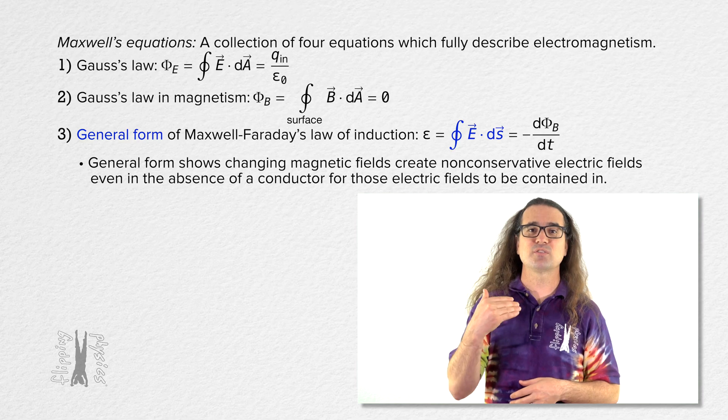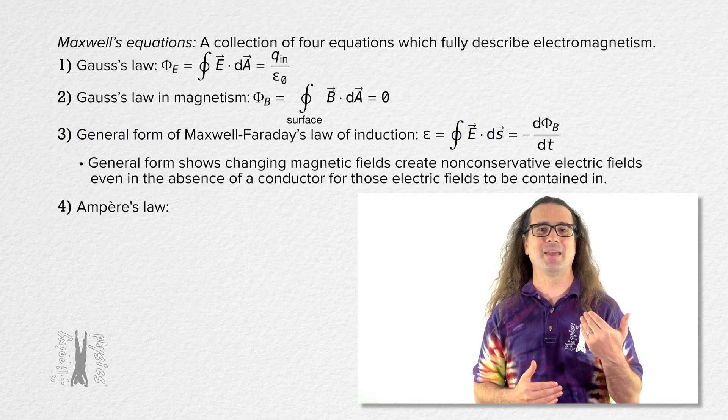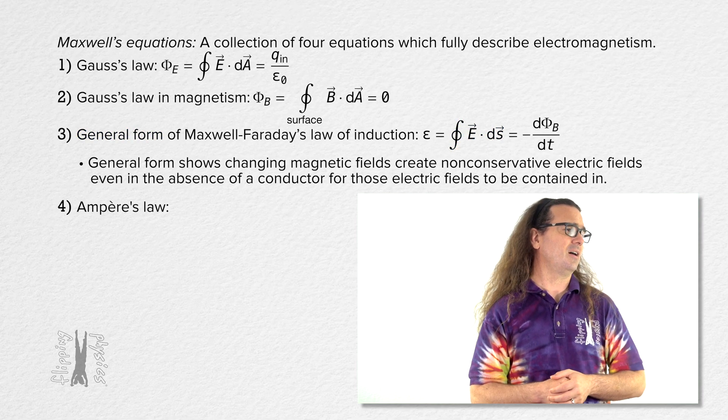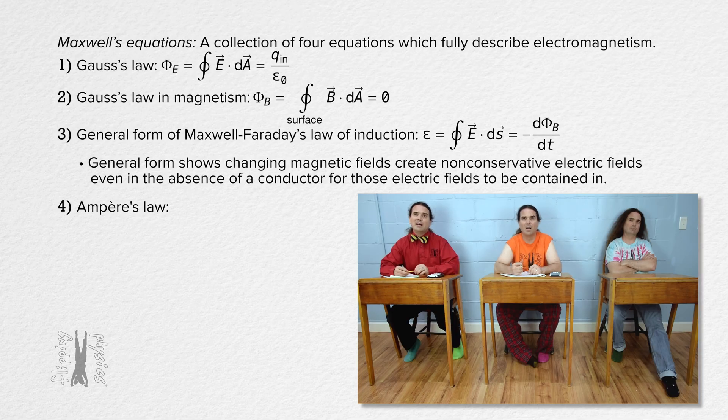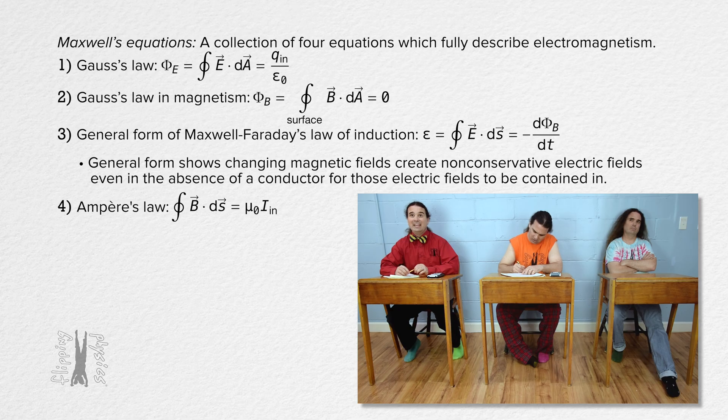And, Maxwell's fourth equation begins with Ampere's law. Billy, what is Ampere's law? Ampere's law states that the closed loop integral of the dot product of the magnetic field and the infinitesimal distance ds equals the magnetic permeability of free space times the current through the plane of the Amperian loop.